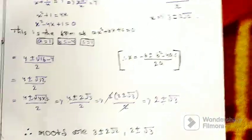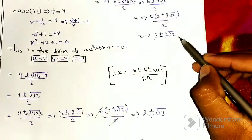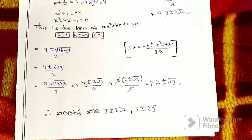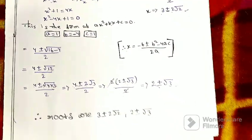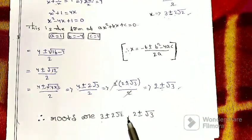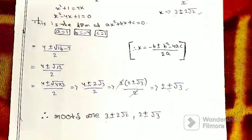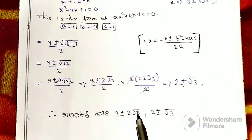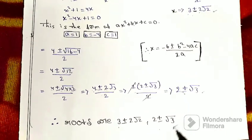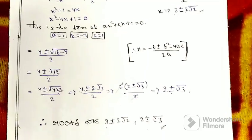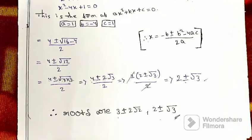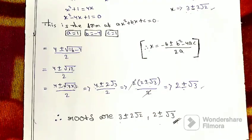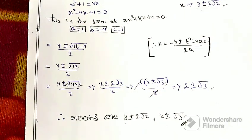So the four roots are 3 plus 2 root 2, 3 minus 2 root 2, 2 plus root 3, and 2 minus root 3. This is the complete solution. If you like this video, please like, share, and subscribe to the channel. Thank you.